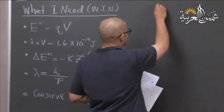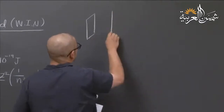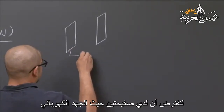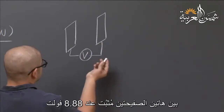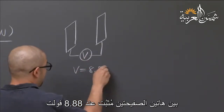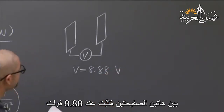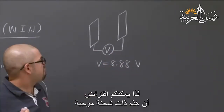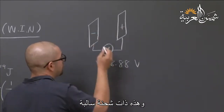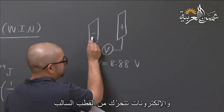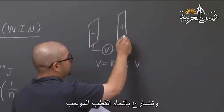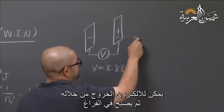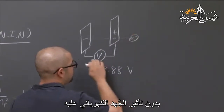I'm going to start drawing an image. Let's say I have two plates where the voltage between them is set at 8.88 volts. What's happening here is that you're accelerating electrons. You can imagine this plate is positively charged and this one is negatively charged. An electron starts from your negative plate and accelerates toward your positive plate. You can imagine the plate having a small hole where the electron can exit and be in free space under the influence of no potential.